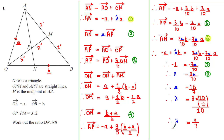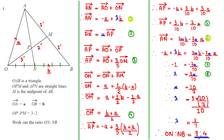We've now found λ = 3/7, which represents the fraction ON of the line OB. If we split OB into 7 equal parts, ON represents 3 of the 7 parts and therefore NB represents the remaining 4 parts. Therefore the ratio ON to NB is equal to 3 to 4. Hopefully that was useful — using the logical approaches from the previous tutorial, this question isn't too difficult. Keep up the good work and I'll see you in the next tutorial.